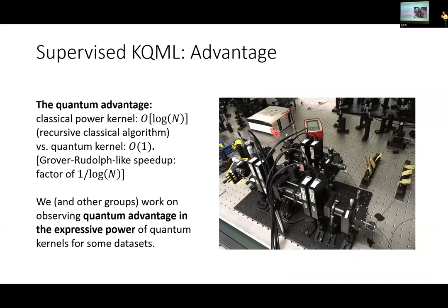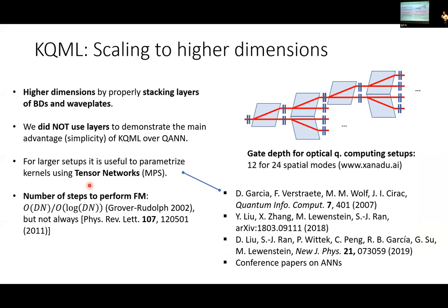How to summarize this? We observed that we can efficiently compress the information - the computation of the kernels - with a Grover-like speedup. If you want to compute power kernels, you can compute them faster. We're still working on showing that we can express something more than classical computing using these methods. We can scale it to higher dimensions by stacking layers.